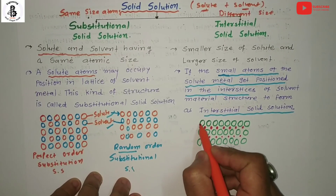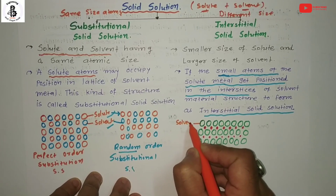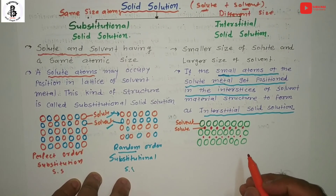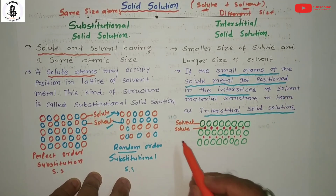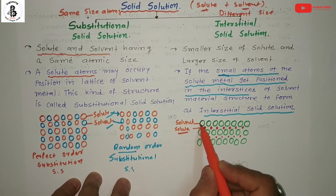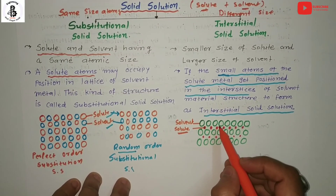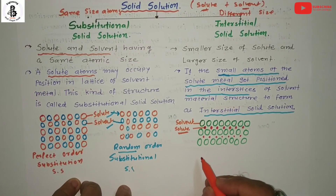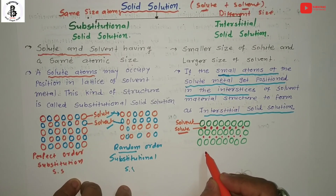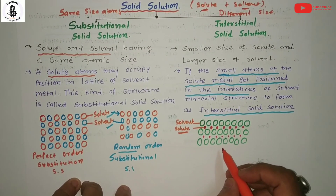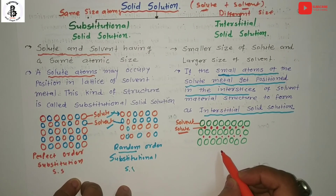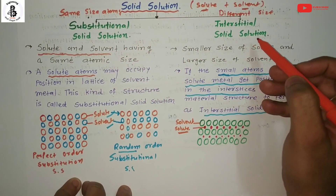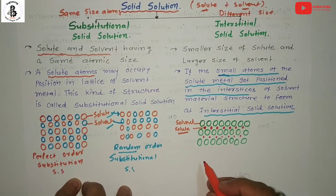In an interstitial solid solution, the large atoms act as the solvent and the smaller atoms act as the solute, occupying the interstitial spaces within the solvent structure. Similarly, if you find a perfect arrangement it is called a perfect order interstitial solid solution, and if random it is called a random order interstitial solid solution. In practice, for both substitutional and interstitial solid solutions, a random order structure is always found.